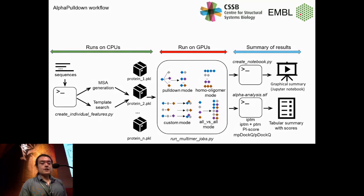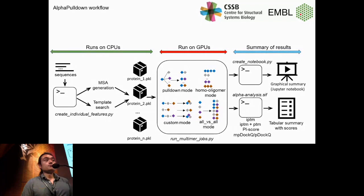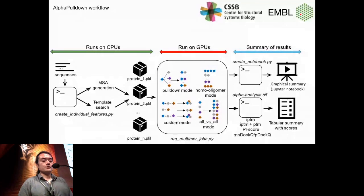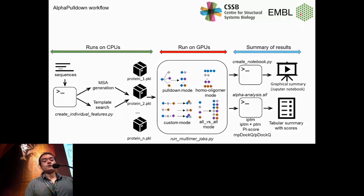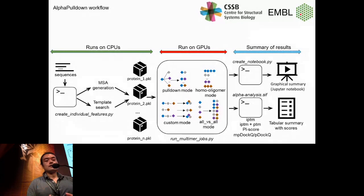After this part is finished, I've created a Singularity image incorporating third-party software to assess model quality. In the end, you get a Jupyter notebook with a graphical summary of 3D models colored by PLDDT per residue, and PAE plots. In addition, you get a tabular CSV summary reporting all scores and properties of the interfaces.